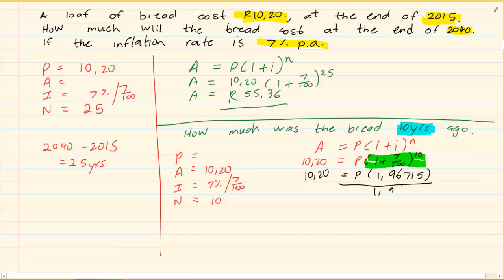Now I am going to divide. So the cost of bread 10 years ago was 5.90.